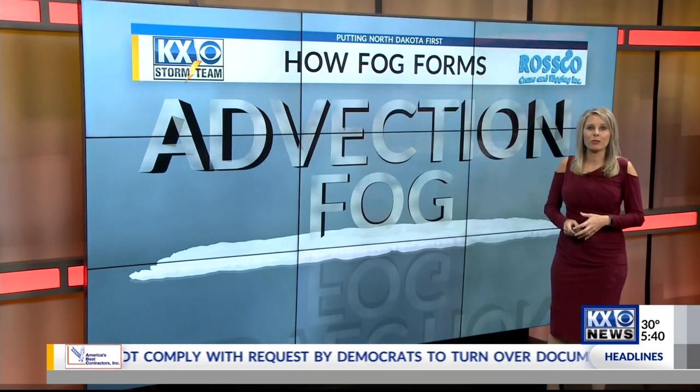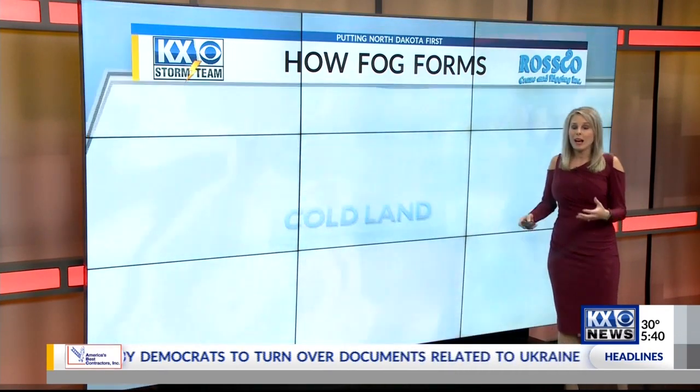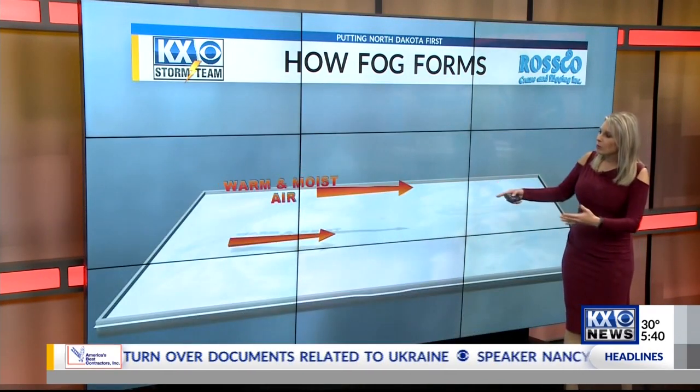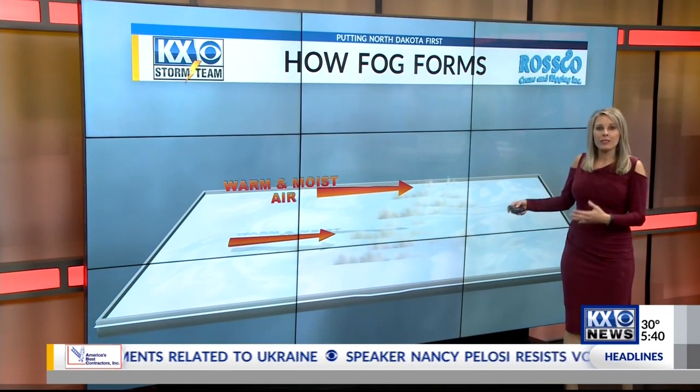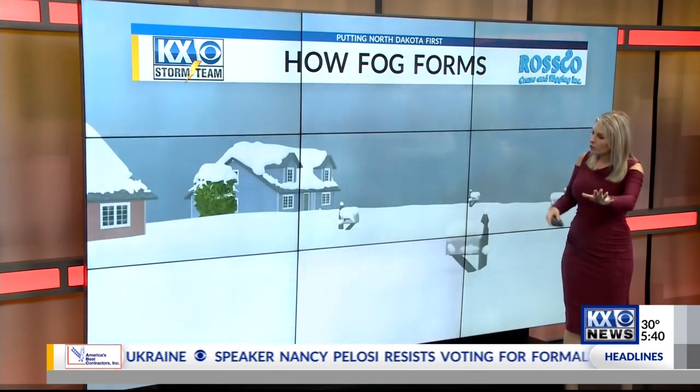Another type of fog that we see here is advection fog, and you can see this when the ground is cool with rain or snow. Sometimes when we have a warm southerly breeze and even a warm front, this can promote fog as well.